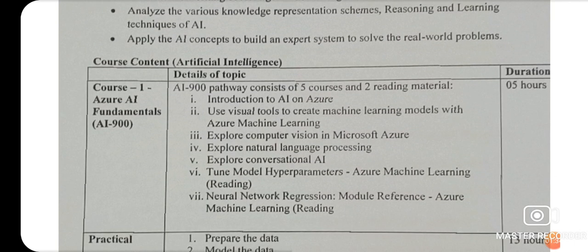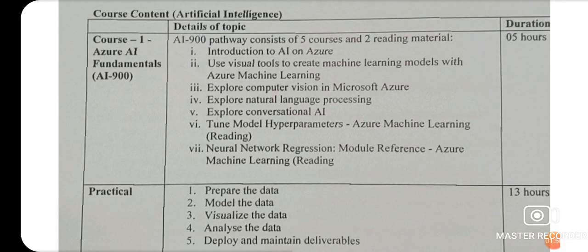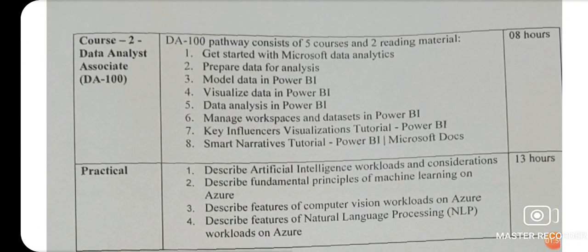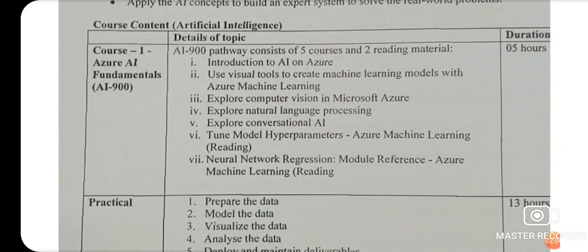Now you can see the syllabus. Course one is Azure AI Fundamentals. The entire syllabus is on Azure fundamentals — it is five hours duration for theory and 13 hours for practical. There will be a course one and course two, like unit one and unit two. In course one, the pathway code is AI-900, which consists of five courses and two reading materials.